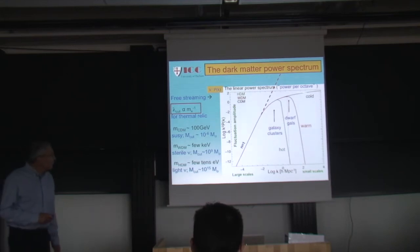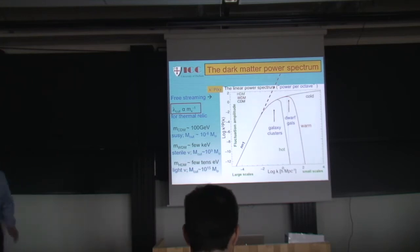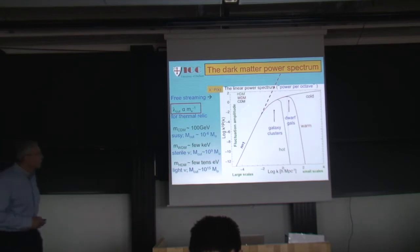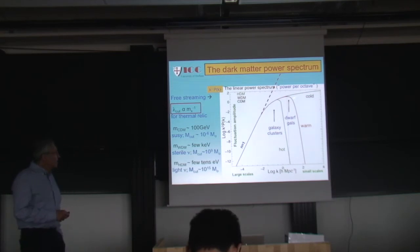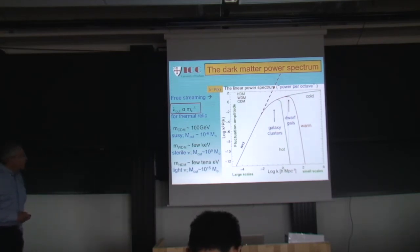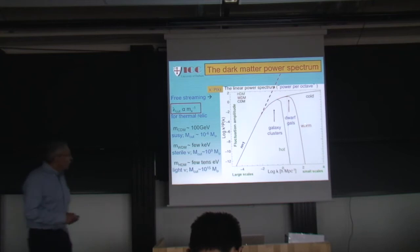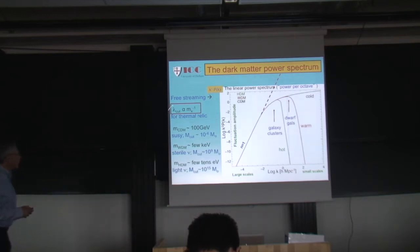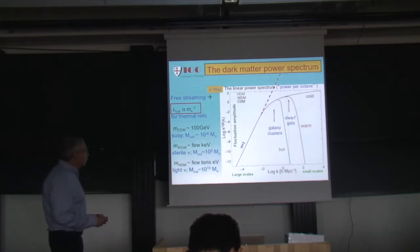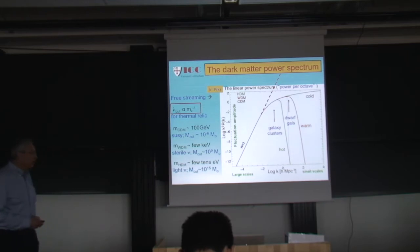If the dark matter is cold, then the particle does not free-stream. There is a cutoff, but it's way down at the scale of an Earth mass — for practical purposes there isn't a cutoff. There's a suppression in the growth called the Meszaros effect, but there is no cutoff. And if the dark matter is warm — between hot and cold — then for an appropriate mass, the cutoff scale scales inversely with the mass of the particle. If the warm particle has a mass of a few keV, the cutoff would occur on the scale of dwarf galaxies.